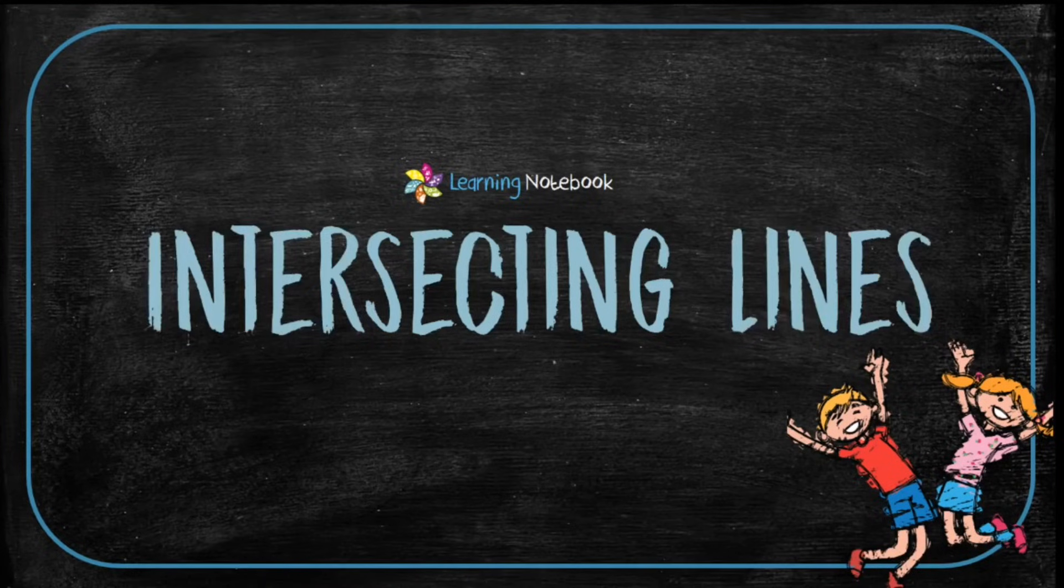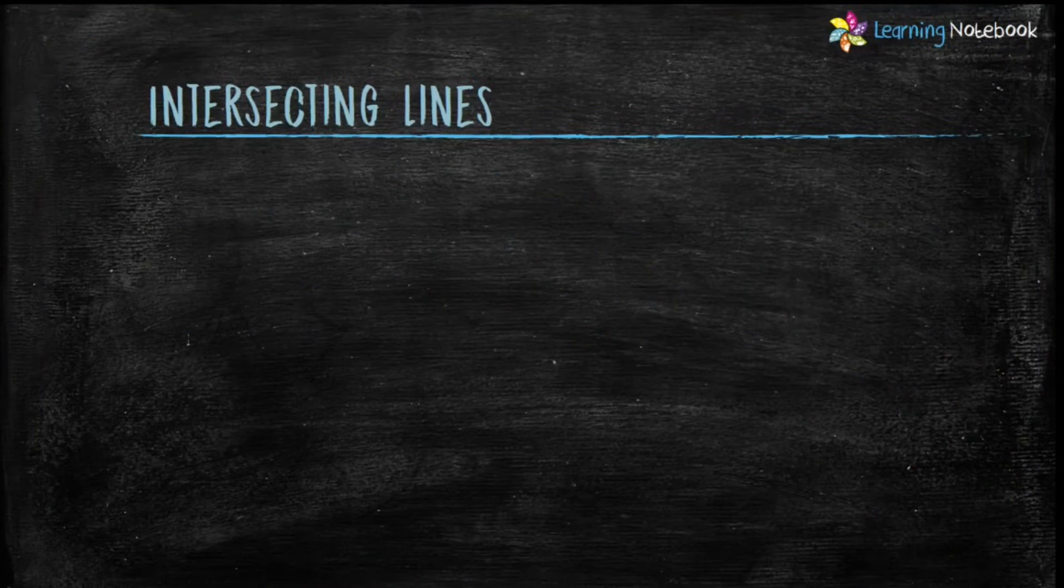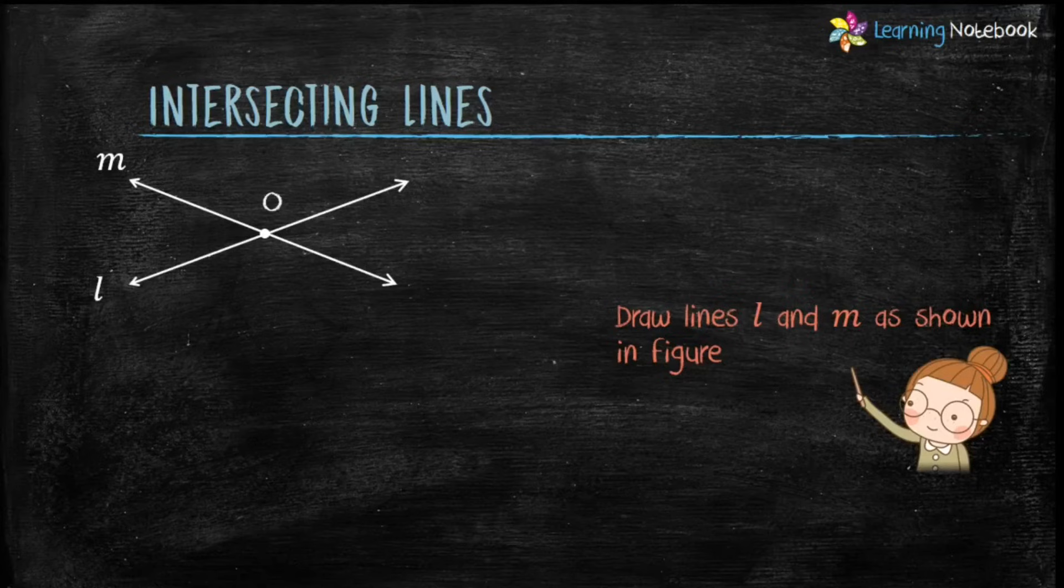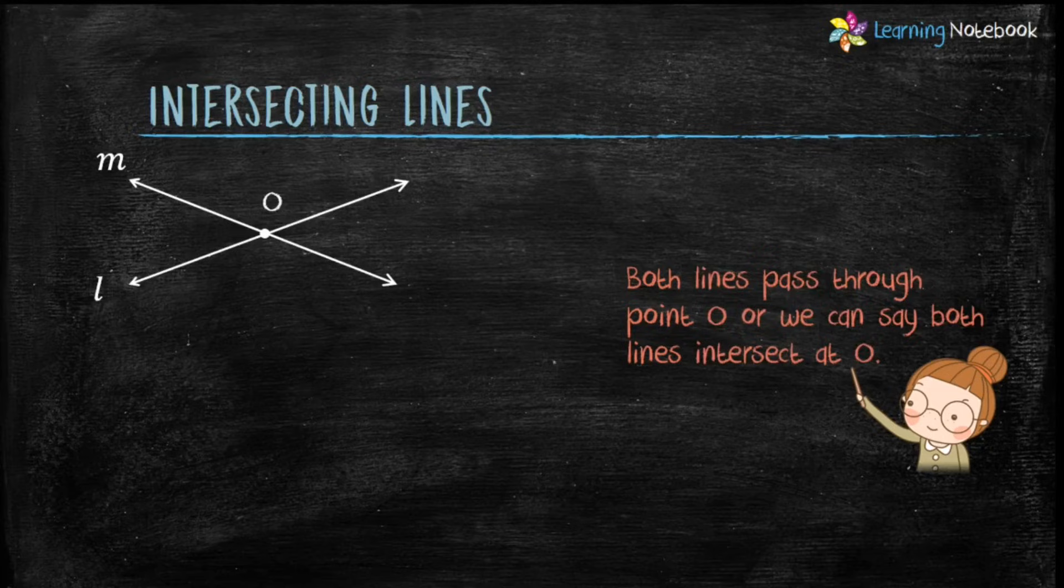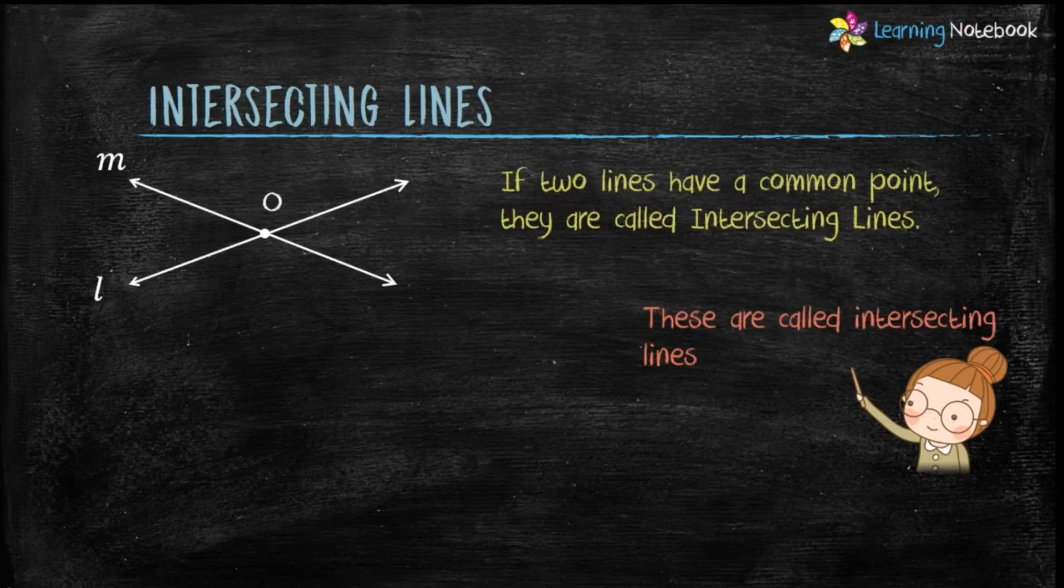Next topic is intersecting lines. To understand intersecting lines, let's draw lines l and m as shown in the figure. You can see both lines pass through point O or we can say both lines intersect at point O. Such lines are called intersecting lines or we can say if two lines have a common point they are called intersecting lines.